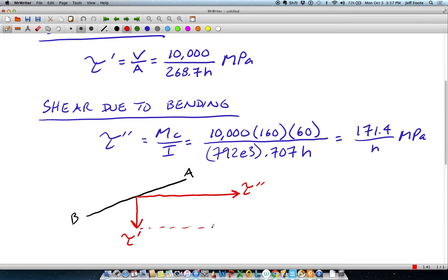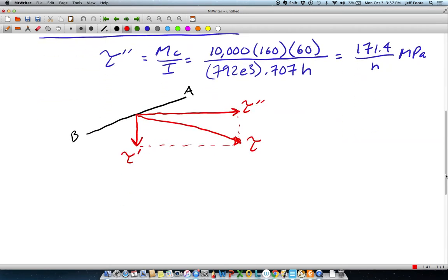Of course, the resultant out of those two, since they are perpendicular, is just going to be the root sum square. We'll call that tau. So tau is going to be equal to tau prime squared plus tau double prime squared, and you've taken the root.